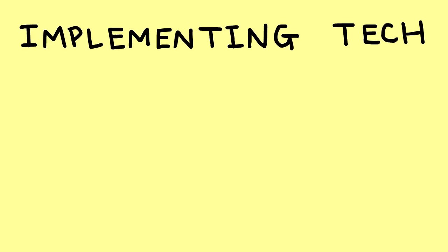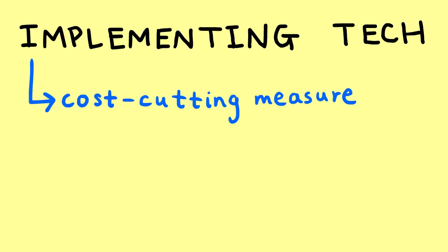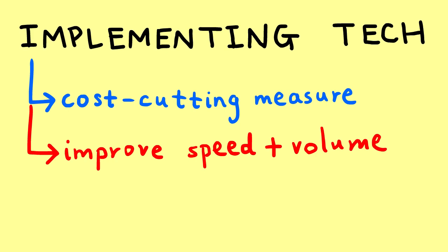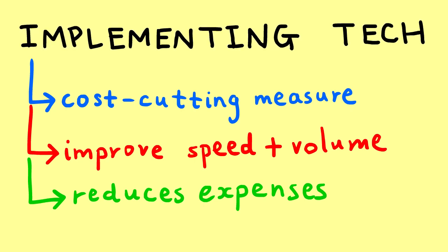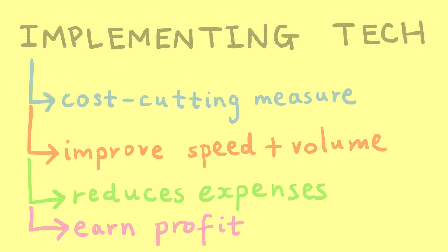The second strategy is implementing technology. This is a cost-cutting measure which serves to improve the speed and volume of the production process. As a result, operational expenses will be reduced because the cost per unit of manufacturing decreases. Therefore, reducing expenses relative to revenue in a given period of time.